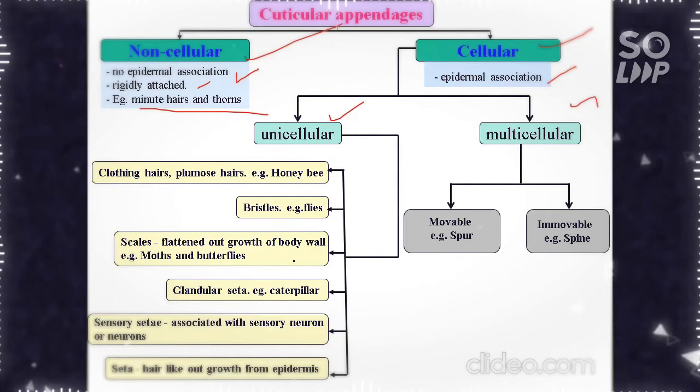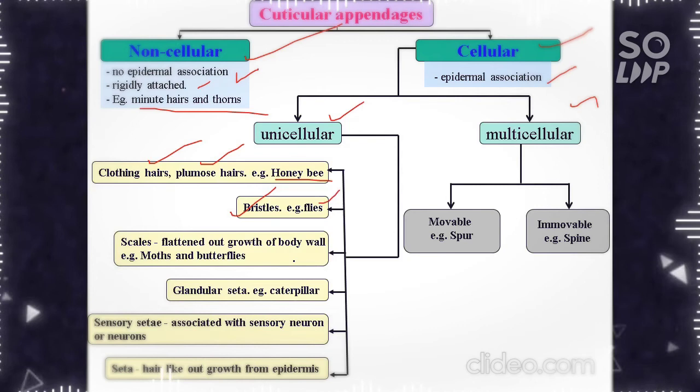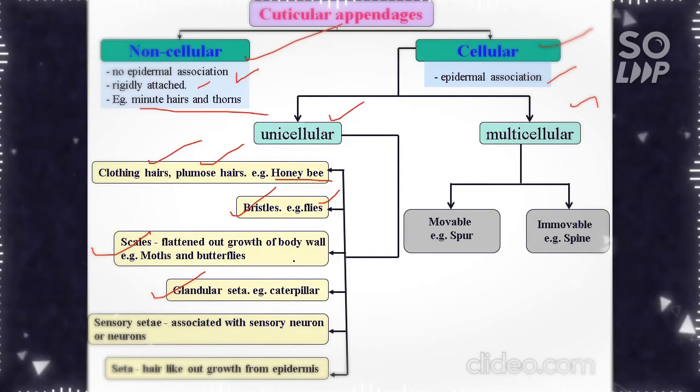Under unicellular appendages, examples include plumose hairs present in honey bees and bristles present in flies like house flies. Flattened outgrowth of the body wall present in moths and butterflies are called scales. Caterpillars have glandular setae that secrete poison. These chemicals secreted by glandular setae cause irritations when touched, as with urticating caterpillars.